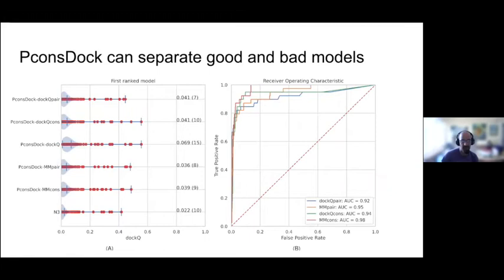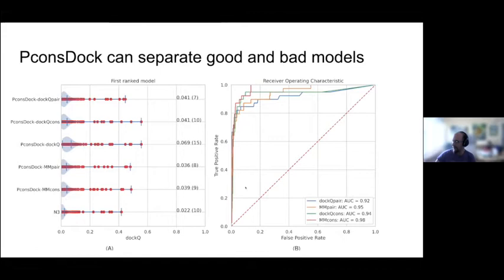The good news is that by a very simple approach we can identify when it works: run the program many times with different parameters, cluster the results, and if you get the same solution many times it is almost always correct. We call this PCOSDOC. You get a separation of correct and incorrect models with an area under the curve of 0.9 or higher — very good at knowing when you have a correct model. Unfortunately the total number of correct models doesn't change much, but at least you know when you're correct.